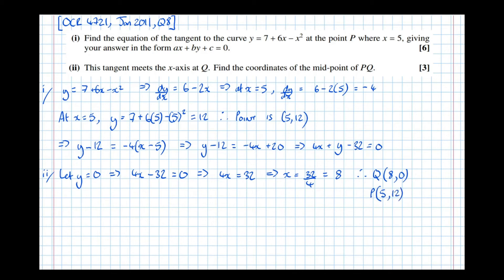So find the midpoint of PQ. Therefore, midpoint of PQ equals the sum of the points, 8 plus 5 over 2.